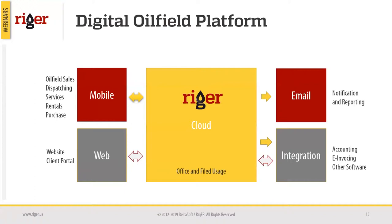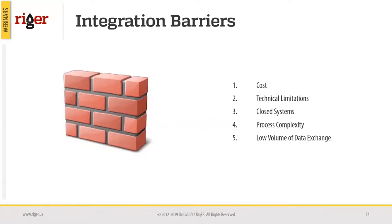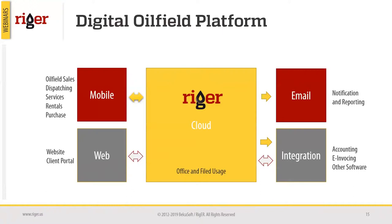Another point is a low volume of data exchange. If there's no significant advantage in the data exchange — for example, with CRM and RIGOR, we can only import client data from the CRM and the rest goes to RIGOR. As a digital platform, RIGOR consists of several technical modules: mobile, email, web client portal, and integrations as the fourth connection point to the RIGOR cloud.